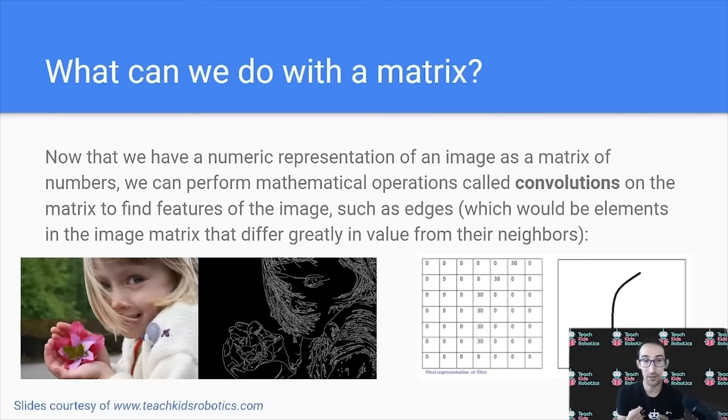So, what can we do once we have this matrix? This mathematical representation of the real world, or an image, known as this matrix, allows us to perform operations, known as convolutions, on the matrix to identify different features of the image, such as edges. In the picture to the left, we can see the edges of the original image are clearly defined, but these were identified using simply a single matrix operation.